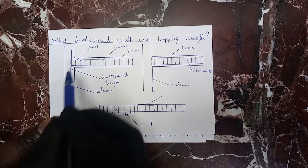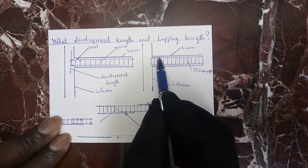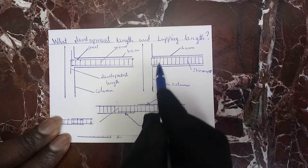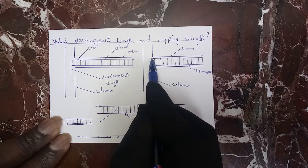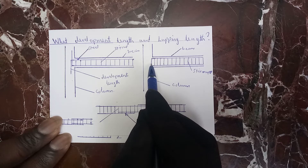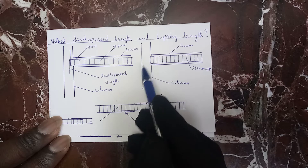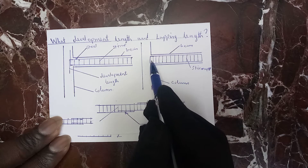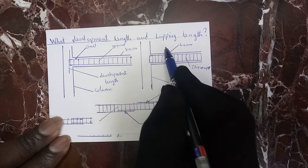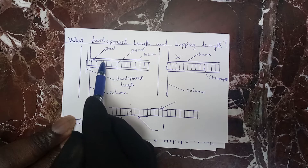Why is development length provided? Because this is a beam attached to a column going up. If you do not provide any development length here, it means it cannot resist the load — it can never resist this load. So if your beam just comes and joins at the column here with no development length, it can never hold. You need to provide it like this.